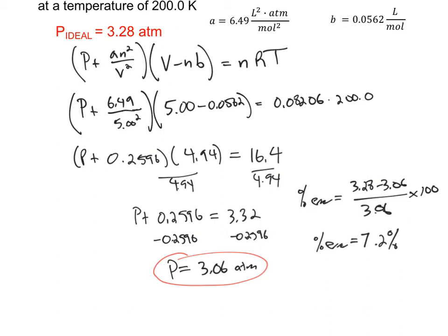So that's reasonable. It depends on what we're doing. If 7% error is acceptable, then maybe we would want to use the ideal gas law in this case. But if we needed a more accurate result, then we would want to go to the van der Waals equation.